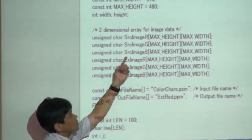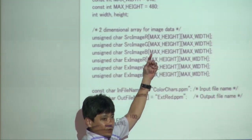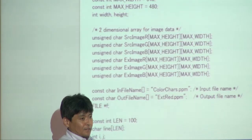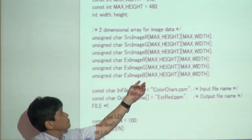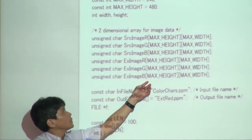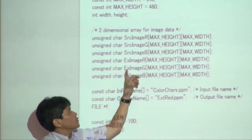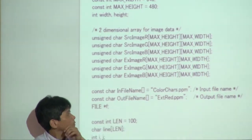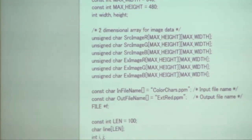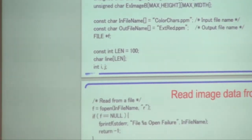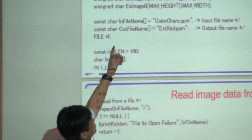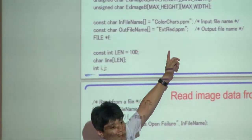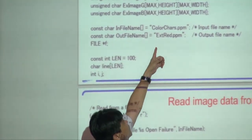The SRC arrays (source image R, G, B) store the image data read from the file. Your program checks for red color and changes it to black, then stores the result in the EXT arrays — extracted image R, G, B. You also define two file names: the reading file is 'color.chars.ppm' and the writing file is 'ext.ppm'.